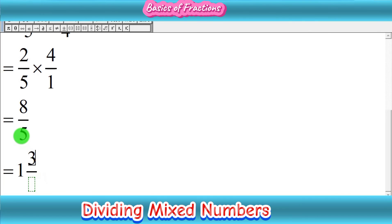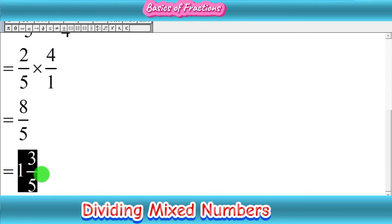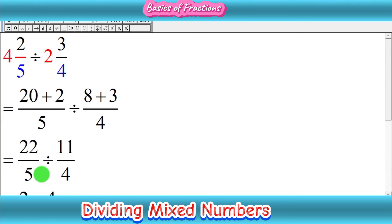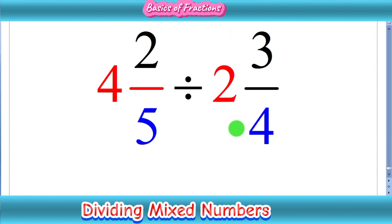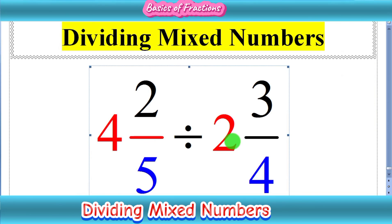So 1 whole 3 upon 5 is our simplified and final answer for the division of 4 whole 2 upon 5 divided by 2 whole 3 upon 4. I hope this was helpful in understanding how to divide a mixed number by a mixed number. Thanks for watching, and don't forget to subscribe to my channel.